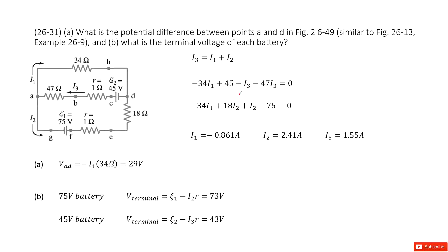Welcome to my channel. I'm Zhang Zimxu. Let's look at problem 31 in chapter 26. Chapter 26 is about DC circuits. We look at this circuit, and we need to pay attention — we have two batteries. How can we solve this circuit? We need to get the current for each resistor and the terminal voltages for each battery.